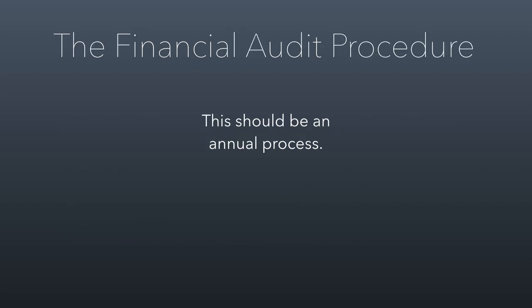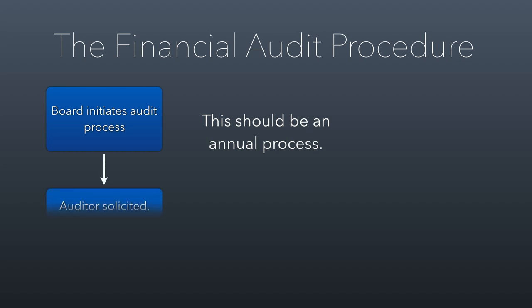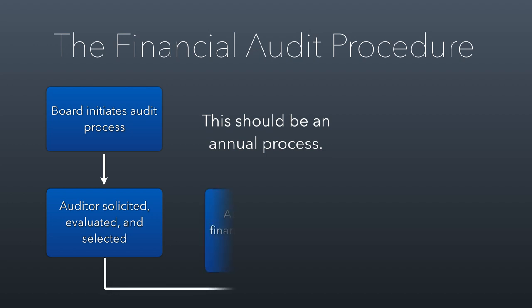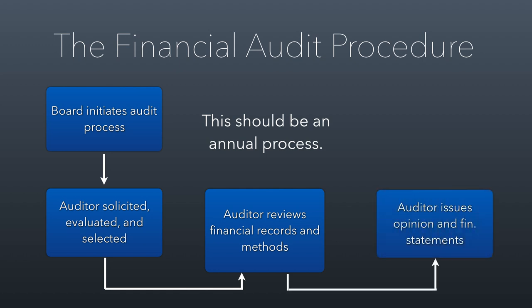Just to take it through quickly: basically it's the board that should be initiating the audit process, not the executive director. When the board initiates it, they are the ones who solicit, evaluate, and select an auditor. The auditor then reviews all the financial records and accounting methods used by the organization. The auditor issues an opinion and financial statements. And then finally, the board reviews and approves the audit as submitted by the auditor.